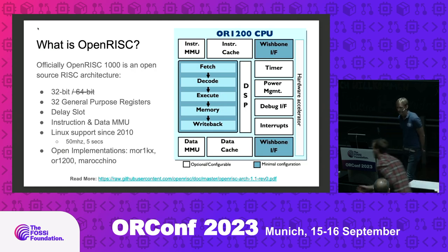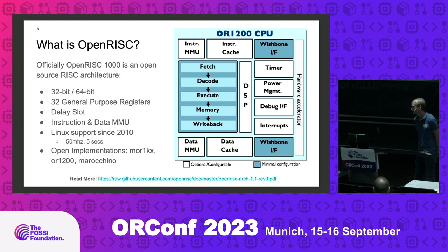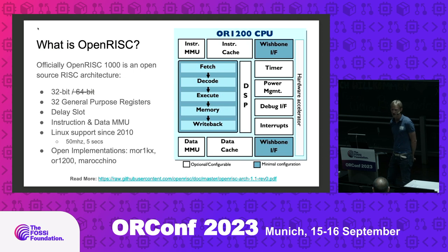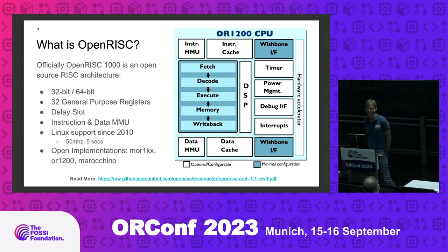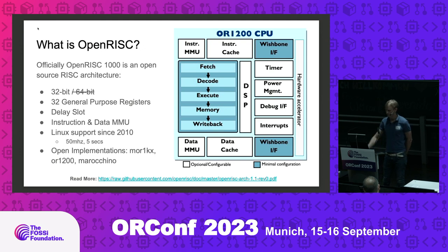The mor1kx and or1200 are the main implementations, and there are not many others. In RISC-V, when that was introduced, everyone wrote an implementation of the CPU. I think there were a few other OpenRISC implementations but not many that are easily available right now, and I'm the main maintainer of OpenRISC.